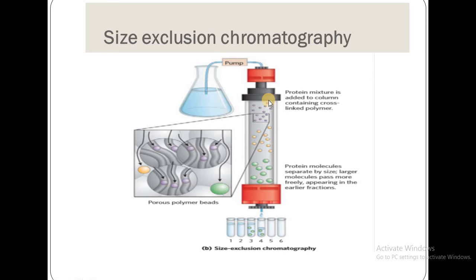Size exclusion chromatography uses a column containing cross-linked polymers — shown here as porous polymer beads. Protein molecules are separated by size. Larger molecules cannot pass into the pores of the polymer beads, so they pass more freely through the column and appear in the earlier fractions. Smaller molecules are retained longer and elute later.